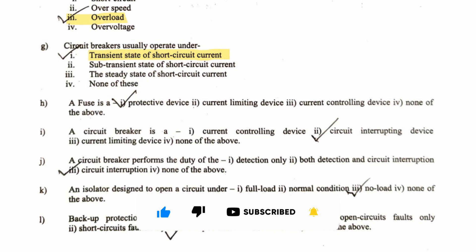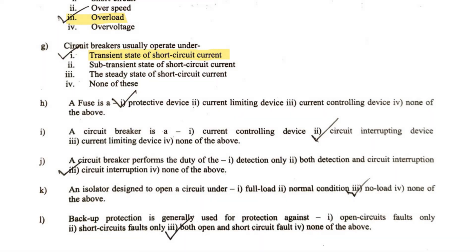The next question: a fuse is — a protective device, current limiting device, current controlling device, or none of the above? A fuse does not have any capability to control or limit the current, but it protects the device by melting itself. So it is basically a protective device, and option one is the correct answer.